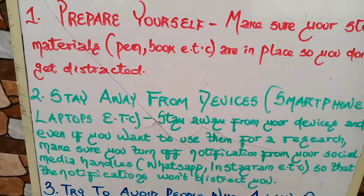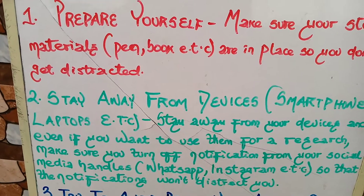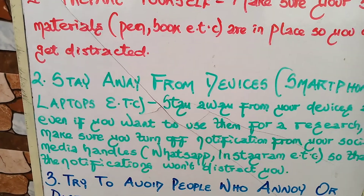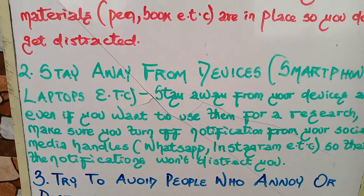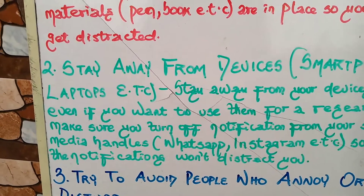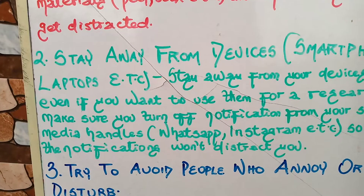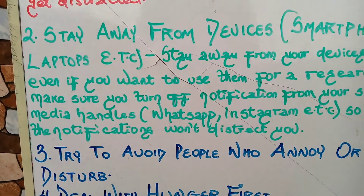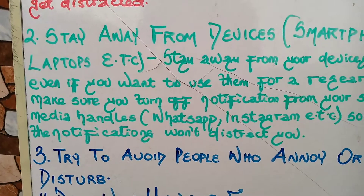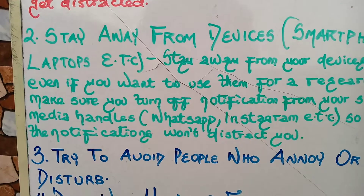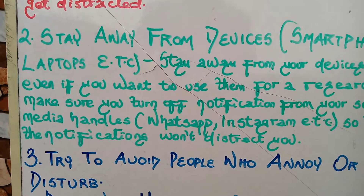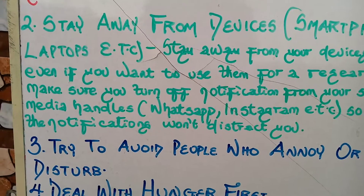Three: try to avoid people who annoy or disturb you. Try to avoid people who annoy or disturb you, so that if they are not around, you'll be able to study well and assimilate what you are reading.